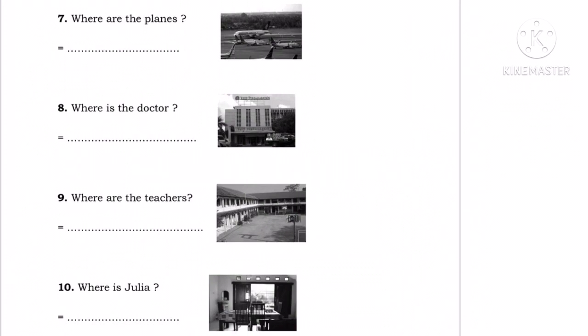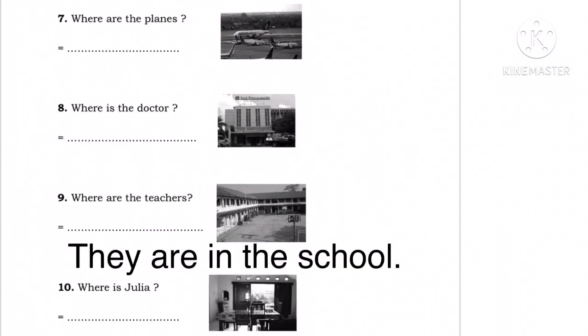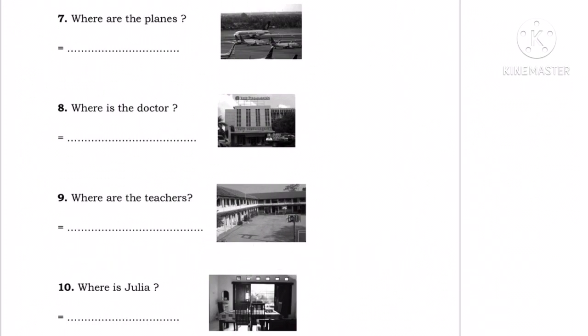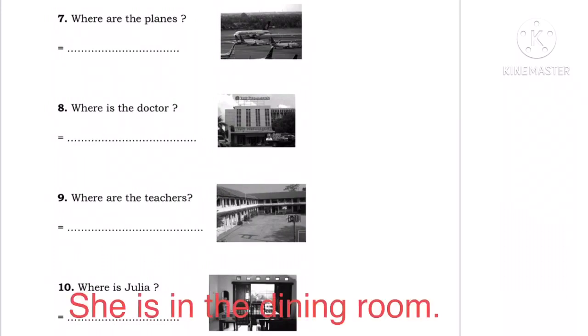Number nine. Where are the teachers? Di mana guru-gurunya? Teacher di sini menggunakan huruf S di akhir kata, jadi kita tahu dia berbentuk plural atau lebih dari satu. Jadi, kita ganti dengan subjek they. They are in the school — mereka ada di sekolah. Number ten. Where is Julia? Di manakah Julia? She is in the dining room — dia ada di ruang makan.